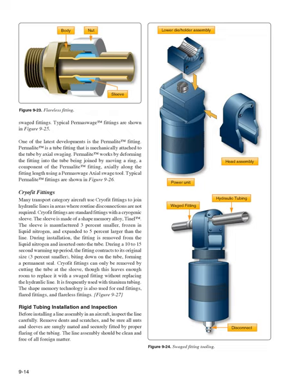One of the latest developments is the permalite fitting. Permalite is a tube fitting that is mechanically attached to the tube by axial swaging. Permalite works by deforming the fitting into the tube being joined by moving a ring axially along the fitting length using a permaswage axial swage tool.